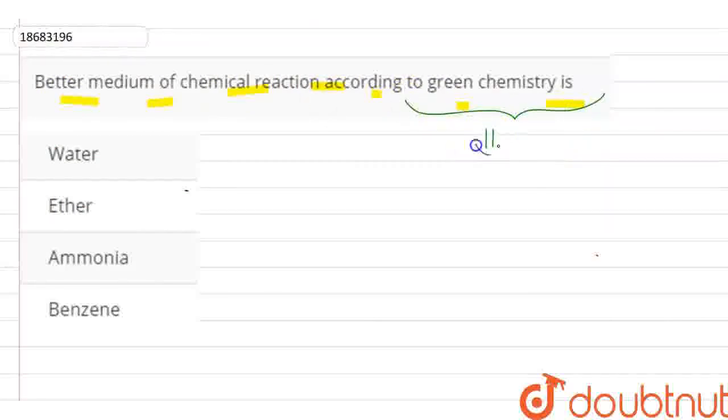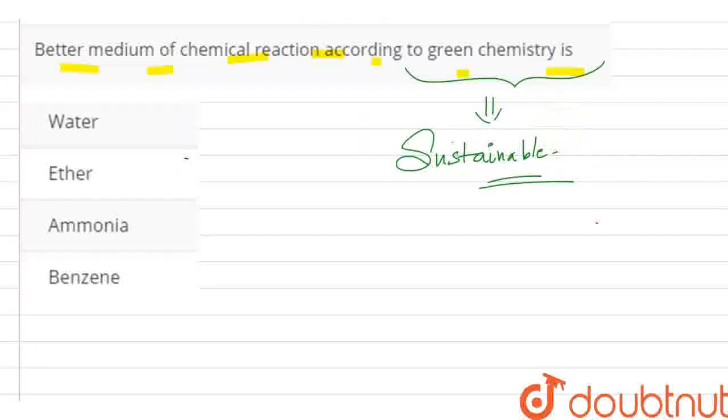Green chemistry is a branch of chemistry that focuses on sustainable development. It is also called sustainable chemistry.